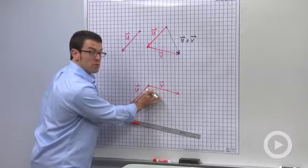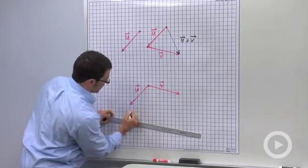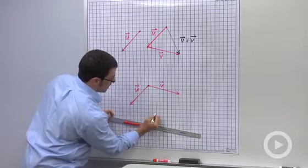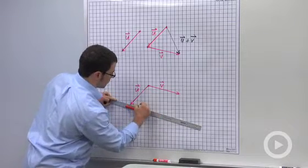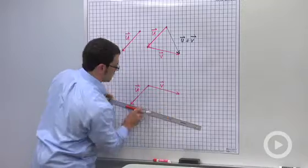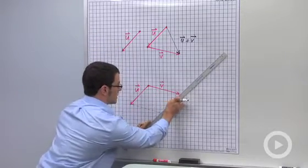I'm counting two squares as one unit here. So down 1 over 1, 2, 3, 4. And the other vector looks like this.